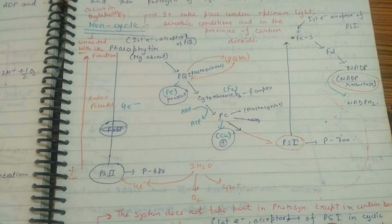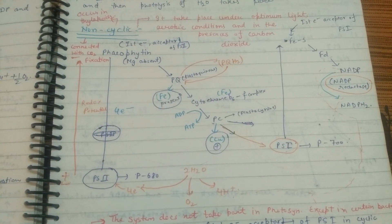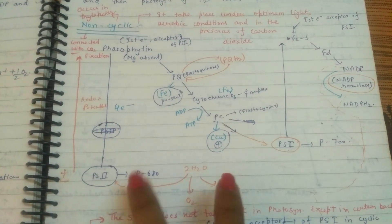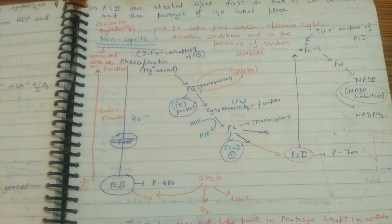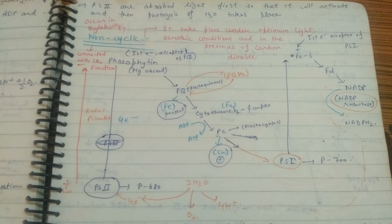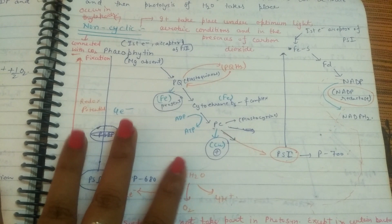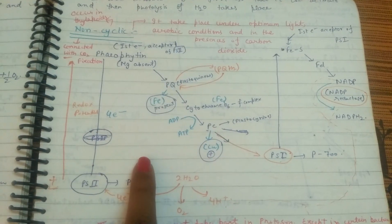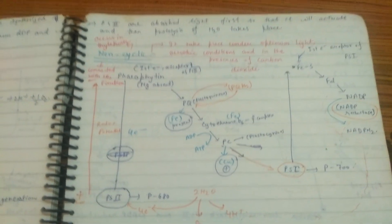In this video I'm going to talk about the non-cyclic reaction of photophosphorylation. There is also a cyclic reaction in which there is only formation of ATP, but in non-cyclic there is formation of both ATP and NADPH2. This non-cyclic process occurs in the thylakoid intermembrane space under aerobic conditions, and for these reactions light should be optimum.